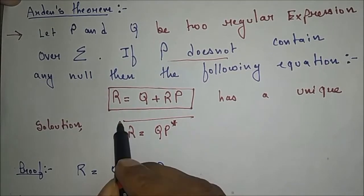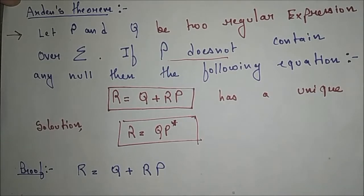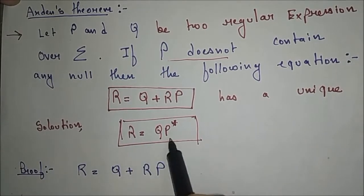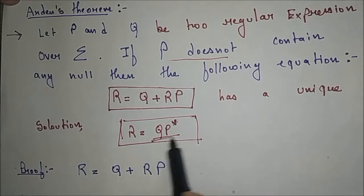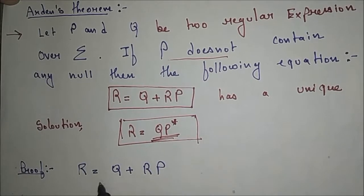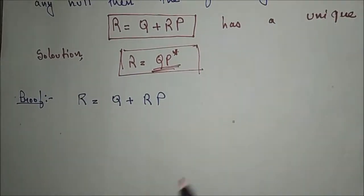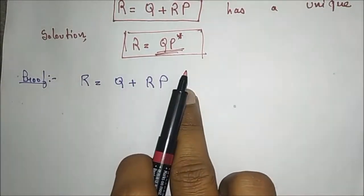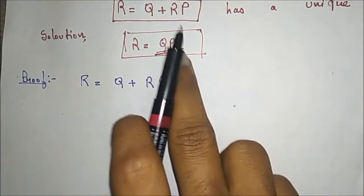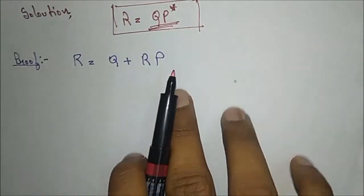R equal to QP* is the main formula required to convert finite automata into regular expression. So in this video, I'll derive R equal to QP* from R equal to Q plus RP.